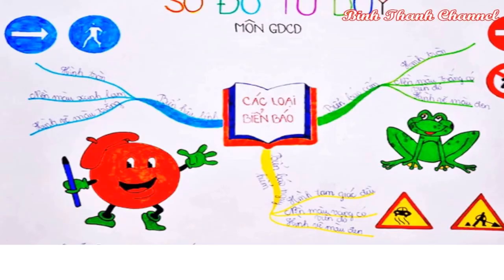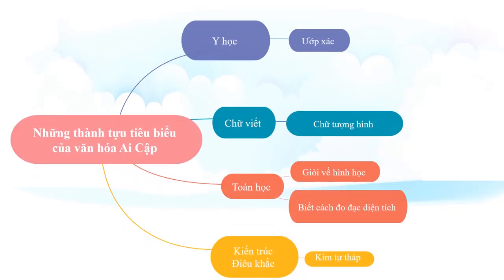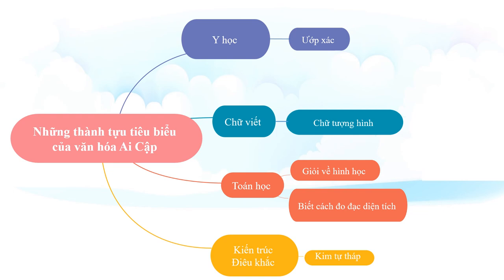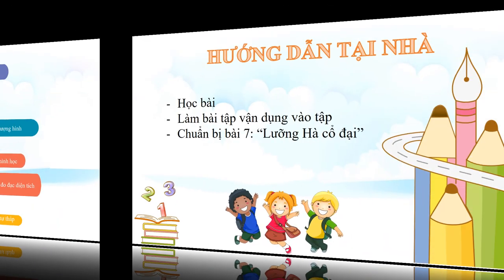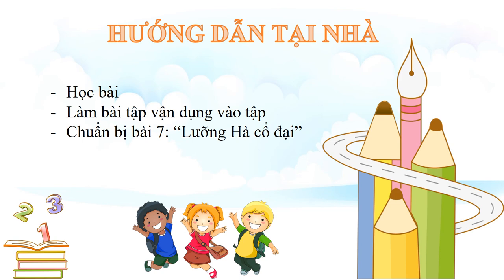Cô gửi cho các bạn một sơ đồ tư duy mẫu mà cô đã làm sẵn để các bạn có thể tham khảo thêm. Hướng dẫn bài tập tại nhà: các bạn học bài, làm bài tập vận dụng vào tập, và chuẩn bị cho bài 7 - Lưỡng Hà cổ đại. Cô chào các em!